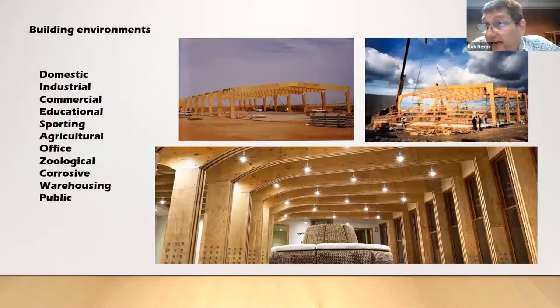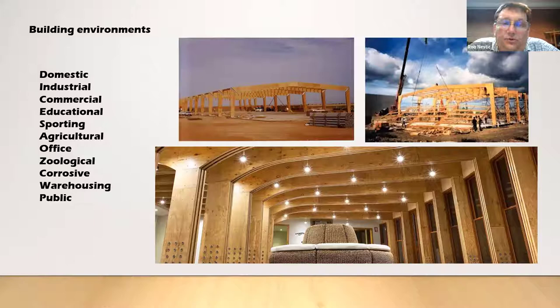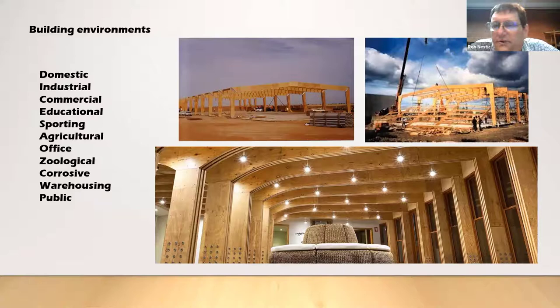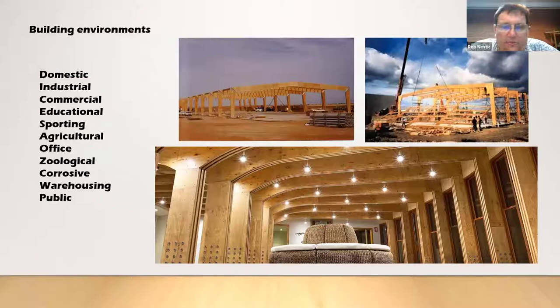The top left shows a composting shed designed back in the early 90s in Mildura. The client had used a steel shed where high ammonia from composting corroded the steel purlins within a year. This shed was designed with a 30-metre span and 6-metre high eaves, with all structural elements hot-dip galvanised or stainless steel fixings and screws — it has had no issues for over 30 years. The top right is an industrial factory shed, and the bottom image is a public library where curves cut into the LVL provide a very attractive structure.